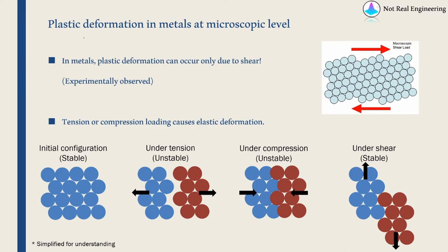Let's see what happens at the microscopic level when we apply a load on any metal or crystal. In metals, plastic deformation can occur only due to shear — this is experimentally observed. If you apply a shear to the atoms, then only will the material undergo permanent deformation. All other loads like tension or compression will cause only elastic deformation.